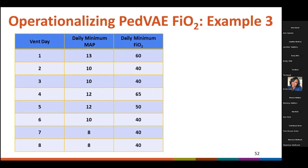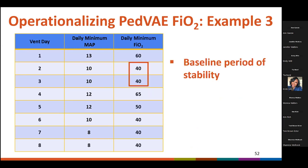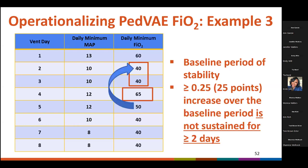In this example, there is again a period of stability in the daily minimum values in the FiO2 parameter on vent days two and three. This baseline period is immediately followed by an increase in the daily minimum FiO2 on vent day four that meets the requirement of at least 25 points over the first day of the baseline period. However, the increase is not sustained for at least two days. On vent day five, the daily minimum FiO2 is 50, which is not at least 25 points over the daily minimum FiO2 of 40 on vent day two, so PVAE is not met.